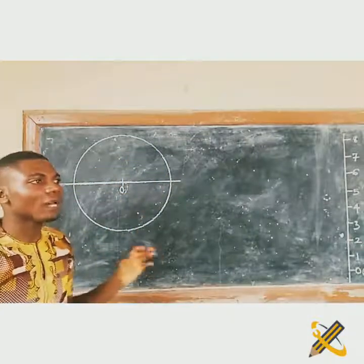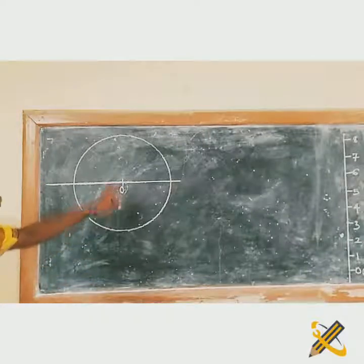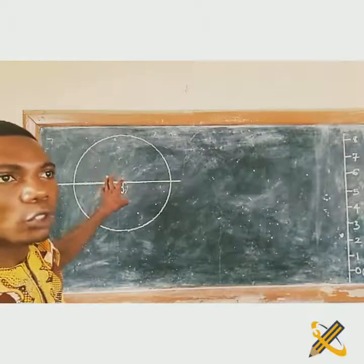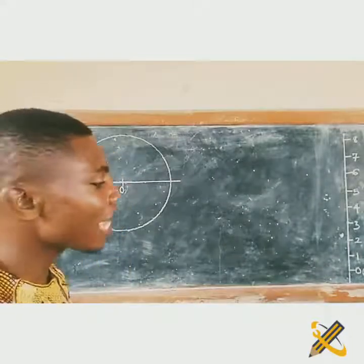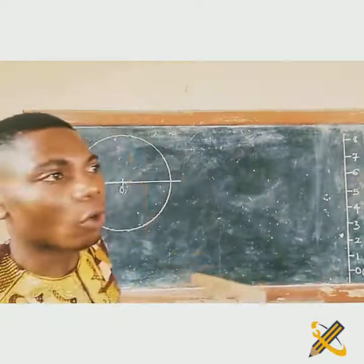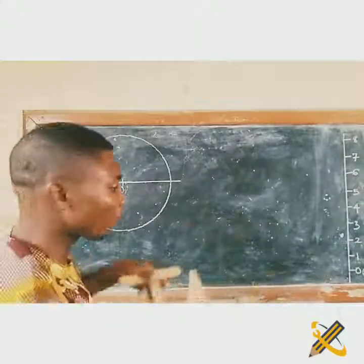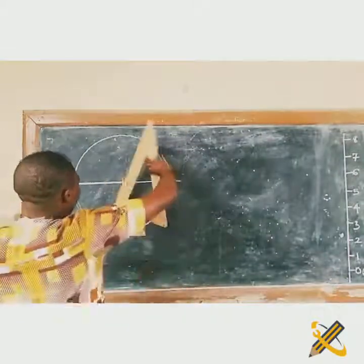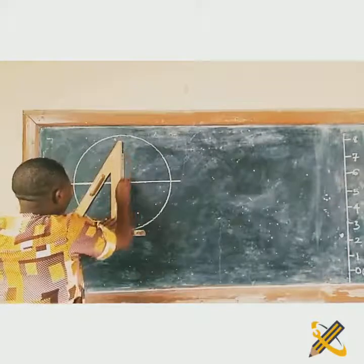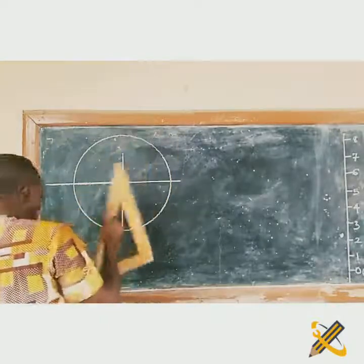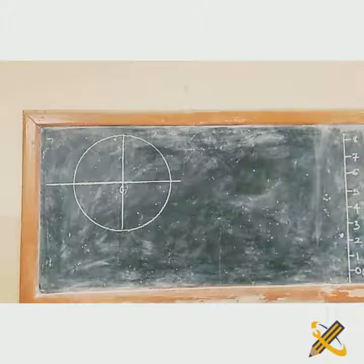So after drawing the circle, initially this circle is already divided into two equal parts. Now I need to divide this circle into four equal halves first. I can do that with the bisection method, or by making use of my T-square in conjunction with my set square. So I am going to use those tools to divide the circle into four equal halves.